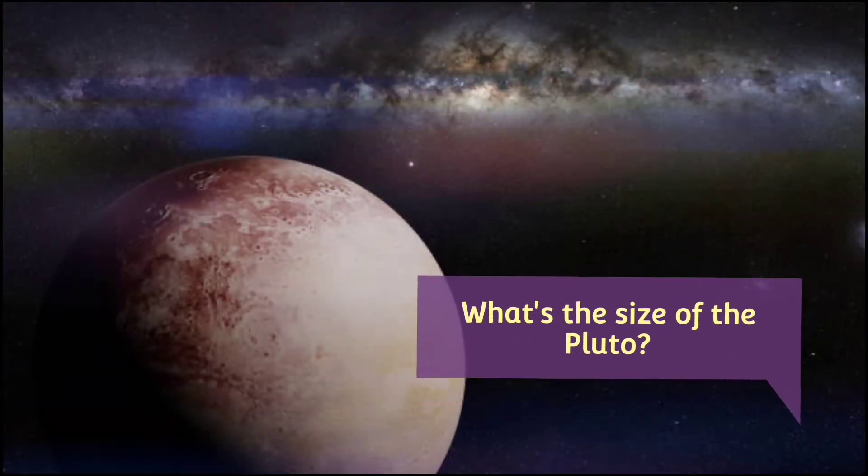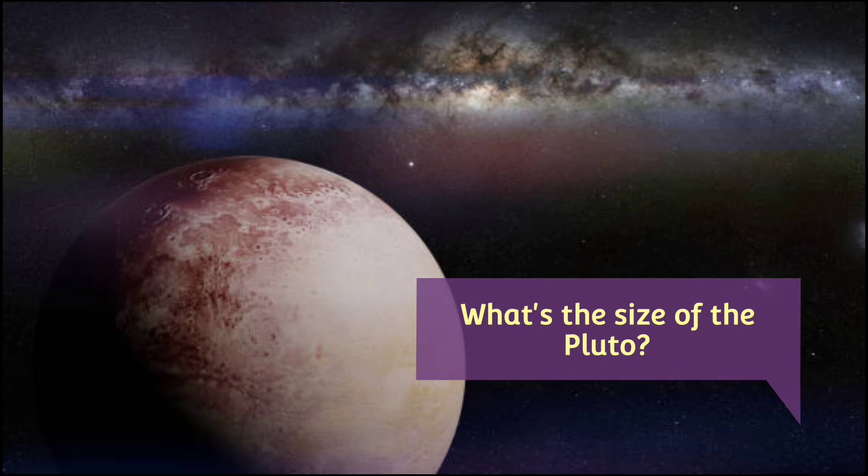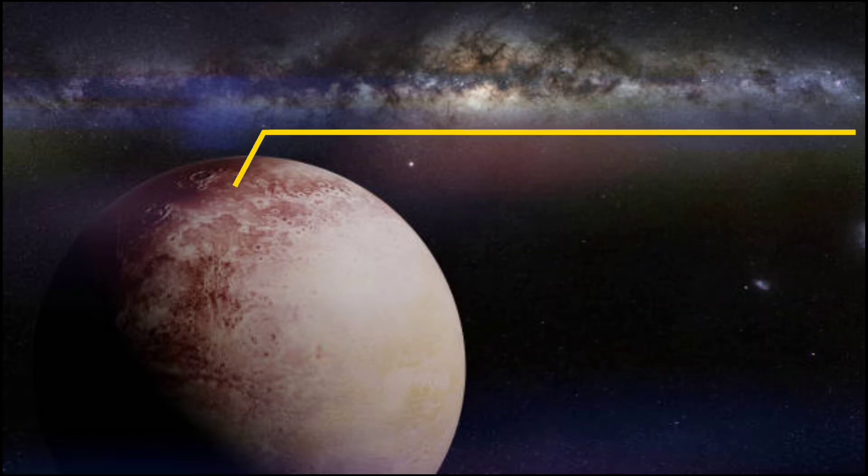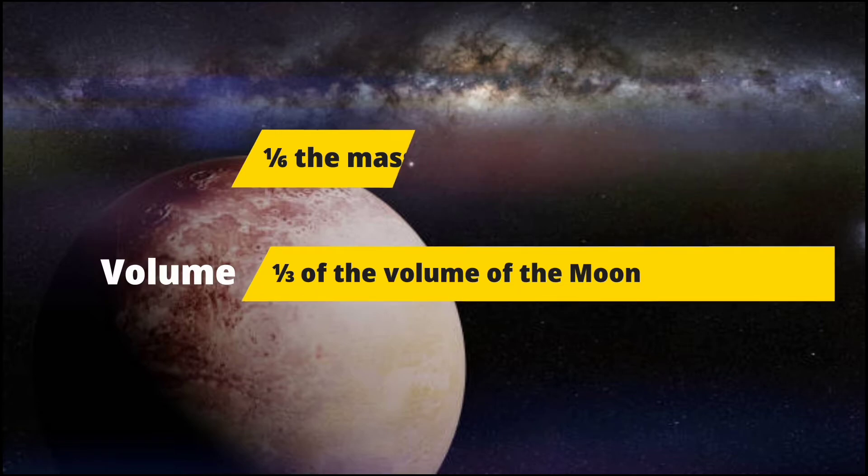What is the size of Pluto? Is it big as Neptune? Or like our Earth? Or at least as the Moon? No, it is even smaller than our Moon because it is one-sixth the mass of our Moon and one-third its volume.